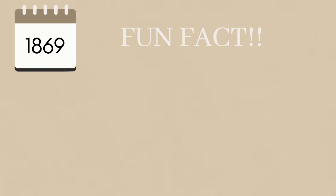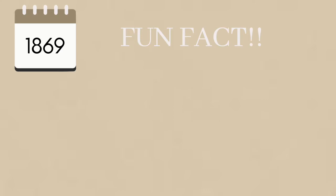The Civil War and Reconstruction can be presented through thematic lenses. Regarding American national identity: prior to the 14th Amendment, there was no legal protection for citizens of different backgrounds. The 14th Amendment ensures people equal rights and protection under the law, and changed the lives of previously enslaved people by providing U.S. citizenship and releasing them from lives of slavery.